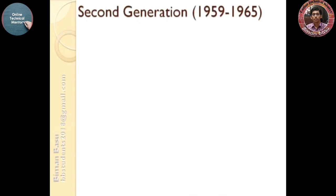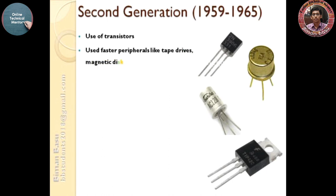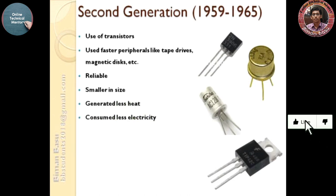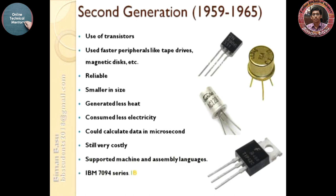Second generation of computer: 1959 to 1965. In this generation the vacuum tube was replaced by the transistor. Used faster peripherals like tape drives, magnetic discs, etc. More reliable and smaller in size compared to first generation. Generated less heat, consumed less electricity, could calculate data in microseconds, but was still very costly. Supported machine language as well as assembly level languages. Examples include IBM 7094 series, IBM 1400 series, and CDC 1604, etc.